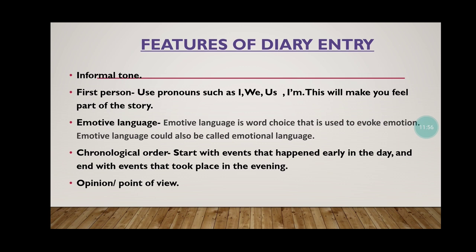Opinion and point of view — here you can give your opinion and point of view. For example, if you had taken a tour but due to some time shortage your teacher did not visit a place that was very essential or famous, you can give your opinion: 'In my opinion, that was a place that was a must to visit, but due to lack of time our teacher told us not to.' You can tell whether that was correct or wrong. After all, this is your diary entry — you write whatever you feel like.